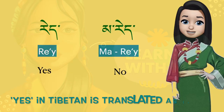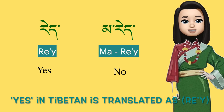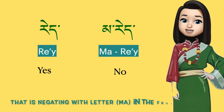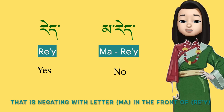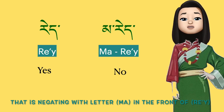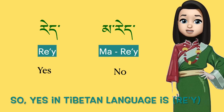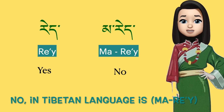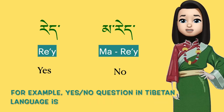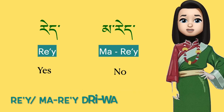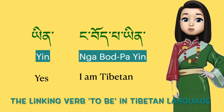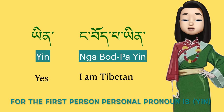Yes in Tibetan is translated as 're'. No means 'ma re' — that is negating with the letter 'ma' in the front of 're'. So yes in Tibetan is 're', no in Tibetan is 'ma re'. For example, a yes-no question in Tibetan is 're ma re ti wa'.